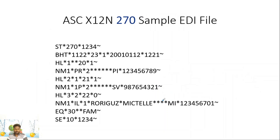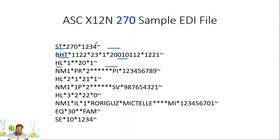Here is a sample EDI file. An EDI file is simply a text file. In a real EDI file there are no line breaks — it will be a continuous text. EDI files consist of segments and data elements. Each line represents a segment. The first two or three letters represent the segment identifier — for example, ST, BHT, HL. Segments are usually separated using a tilde at the end. Looking at the first segment, ST is the transaction set segment, with two data elements: 270 and 1234. Data elements are separated using asterisks.